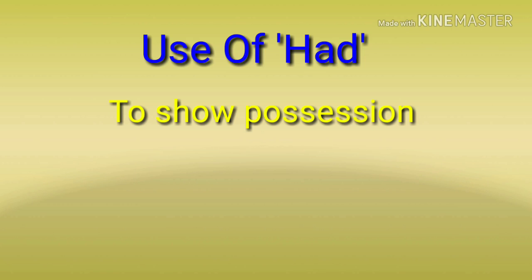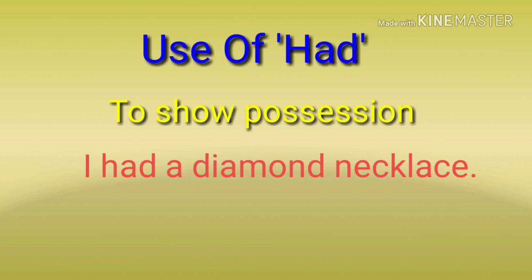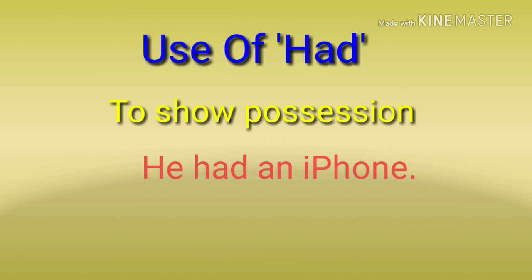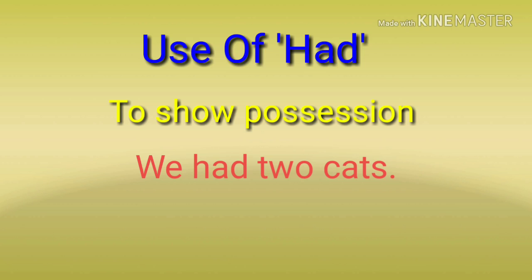'Had' is used to show possession — apne paas kuch tha, koi cheez thi — ye batane ke liye 'had' ka prayog hota hai. For example: mere paas ek diamond necklace tha — 'I had a diamond necklace' — meaning it was there before but not anymore. Uske paas ek iPhone tha — 'He had an iPhone.' 'Had' is used to indicate past possession — something that existed before but no longer does.